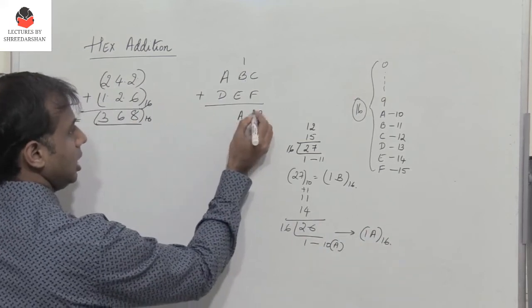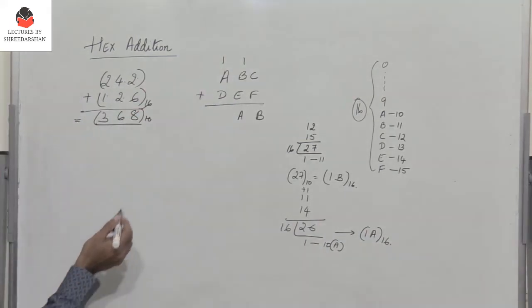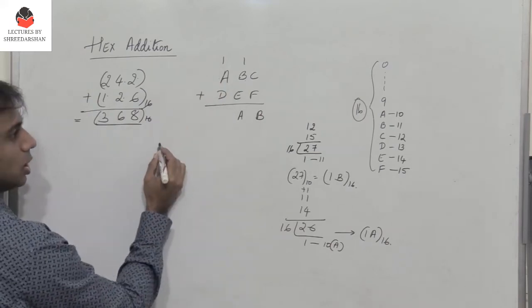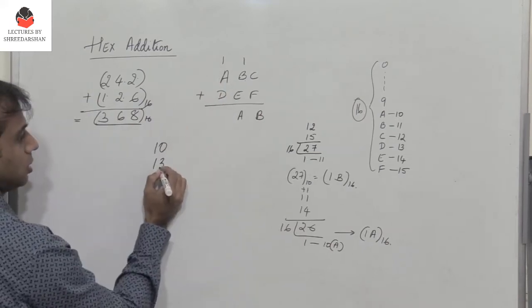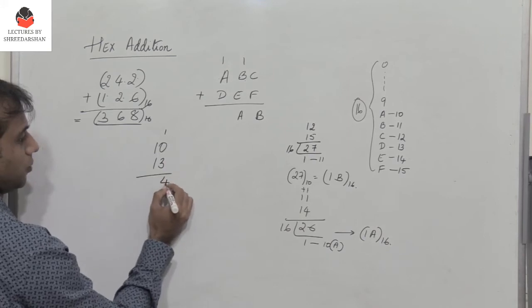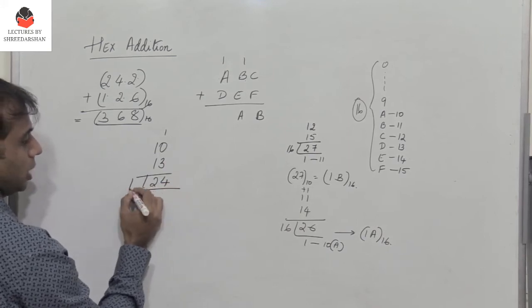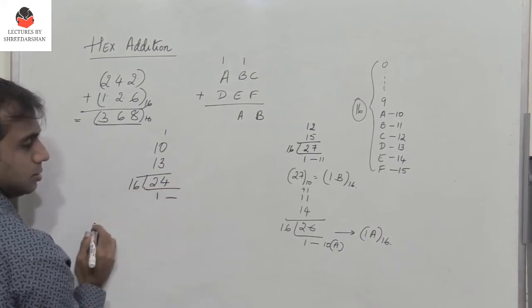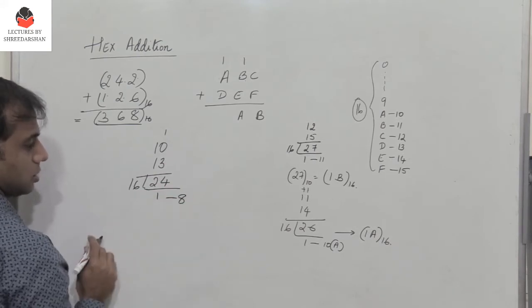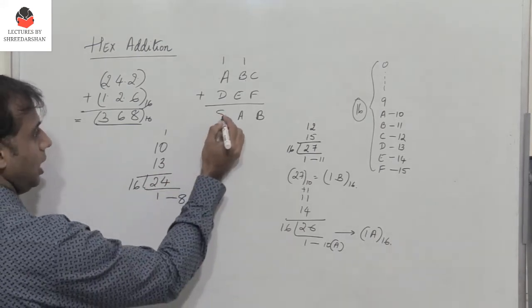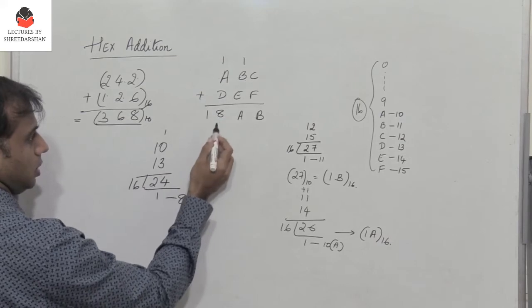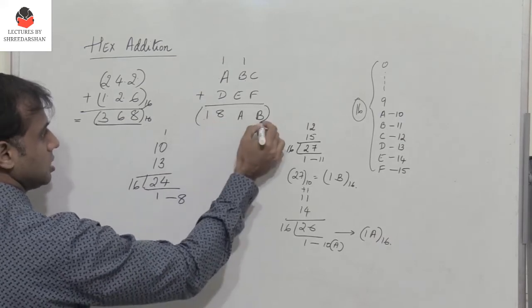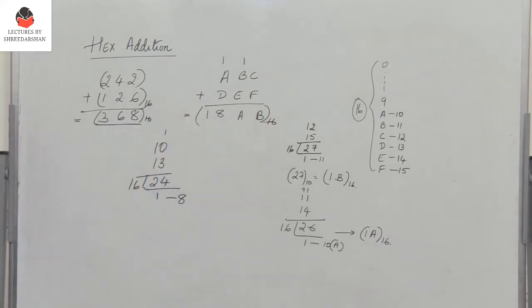Then I need to add D plus A plus 1. A is 10, D is 13, plus 1 equals 24. Divided by 16, I get 1 as quotient and 8 as remainder. So the result is 18 in hex.